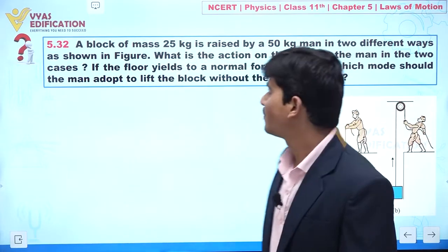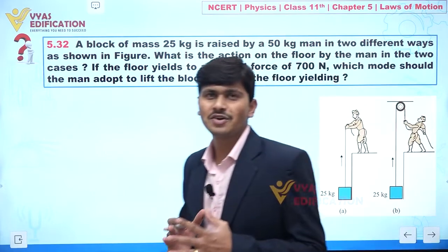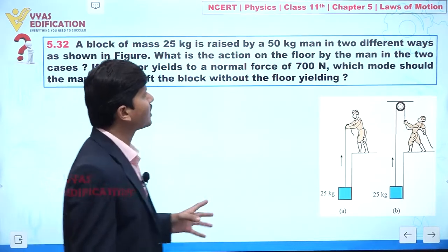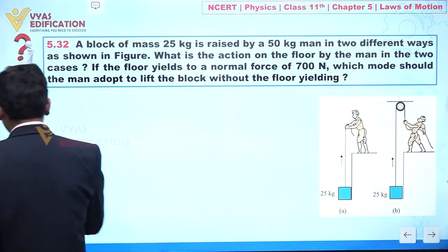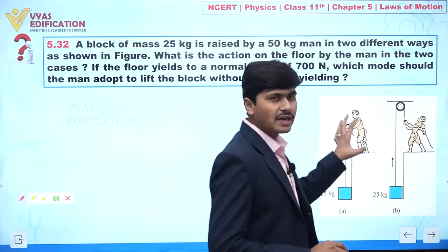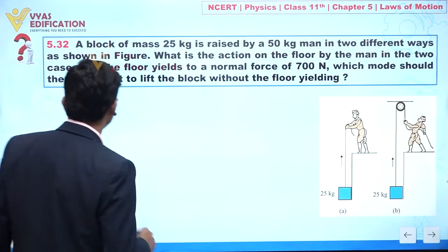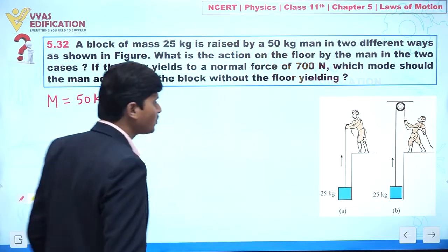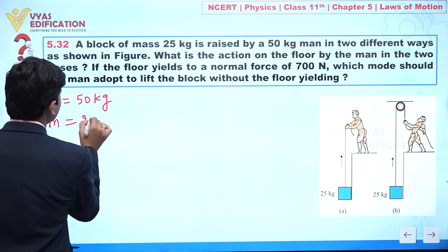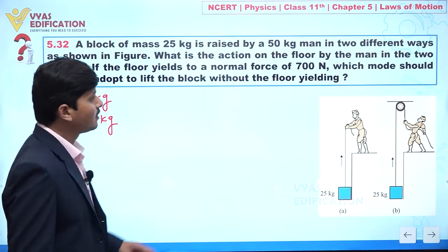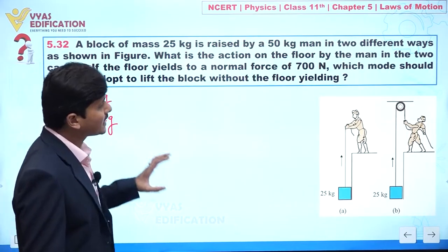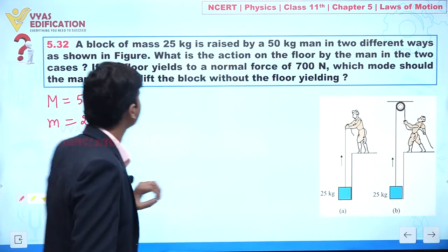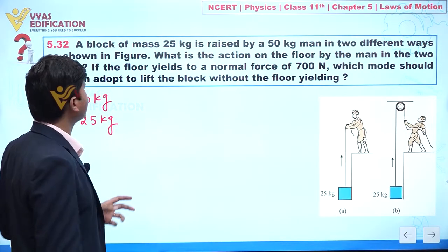We are going to discuss question number 5.32. A block of mass 25 kg is raised by a 50 kg man in two different ways. Let's say the mass of the person is capital M, so capital M is 50 kg, and the mass of the block is small m equal to 25 kg. A person can raise this block by two ways: method A and method B.